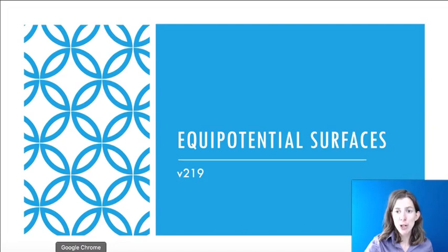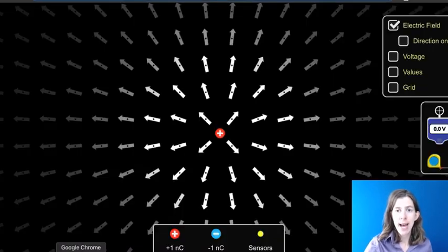And I'd like to start off this video with an applet. This is a FET applet, it's called Charges and Fields. We've seen it before. We used it when we put a charge and we showed the electric field surrounding the charge. We did that before.